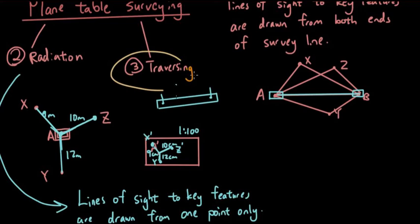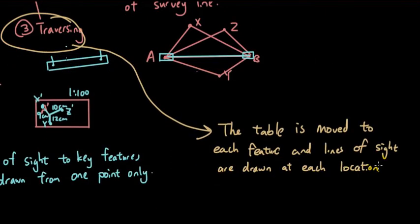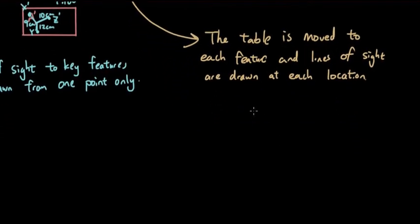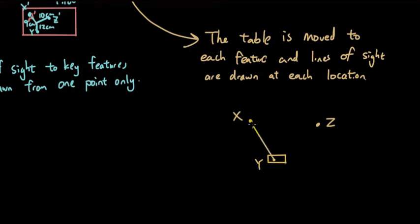Now we're going to cover the traversing method. Take a guess at what it is — what's the only option left? In traversing, the table is moved to each feature and the lines of sight are drawn at each location. It's also quite a tiring method. For example, with points X, Y, and Z, you start by placing the plane table at point Y.